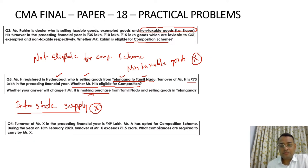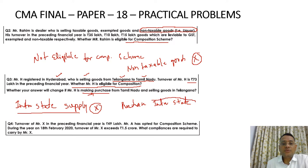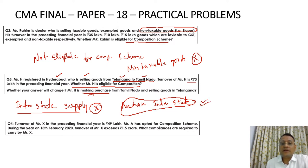The second question: whether your answer will change if Mr. H is making purchases from Tamil Nadu and selling goods in Telangana. He is making purchases which are interstate. Please note that there is no restriction on purchase of goods from interstate — the person is still eligible for composition scheme. So if Mr. H is making interstate purchases, he is eligible for composition scheme, as the restriction applies only to outward interstate supply.